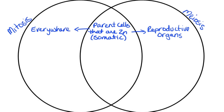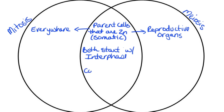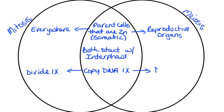Other things we could look at: both are going to start, or be preceded, with an interphase. What this means is that both of them are going to be preceded by copying of the DNA one time. When we're talking about mitosis, we will divide one time — so we copy once and divide once. With meiosis, we copy once but we actually end up dividing two times.